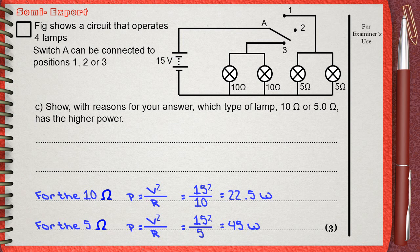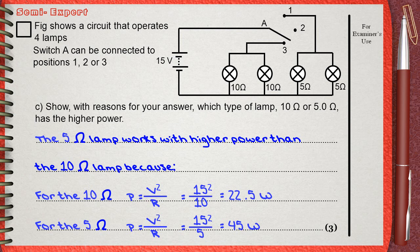This gives the final answer of 45 watts. If you look at these answers, you will find that a 5 ohm lamp works with higher power than the 10 ohm lamp in this parallel connection circuit. This is because of the calculations we made.